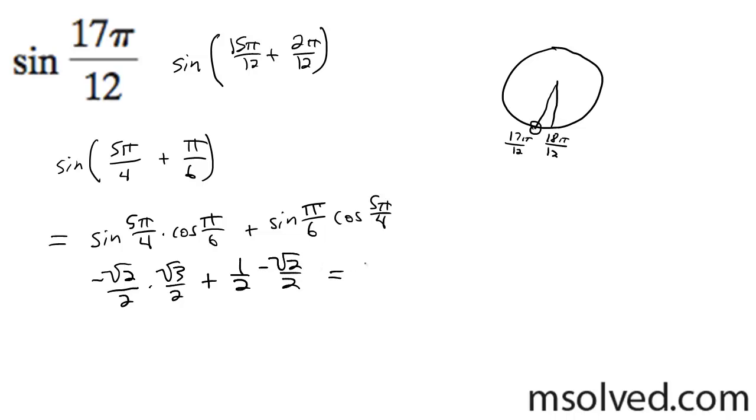Multiplying this, this comes out to be negative √6 over 4 minus √2 over 4. And we can break this down into negative √6 minus √2 all over 4.